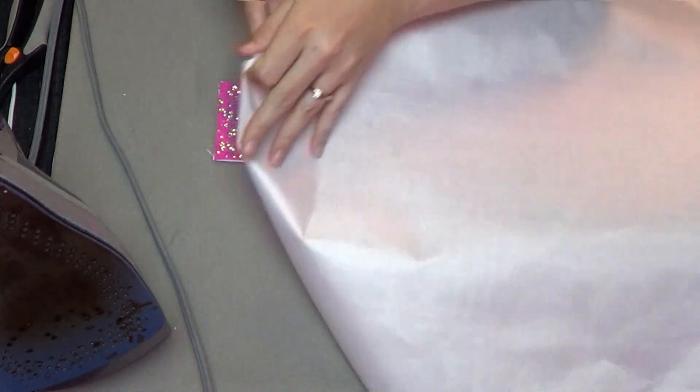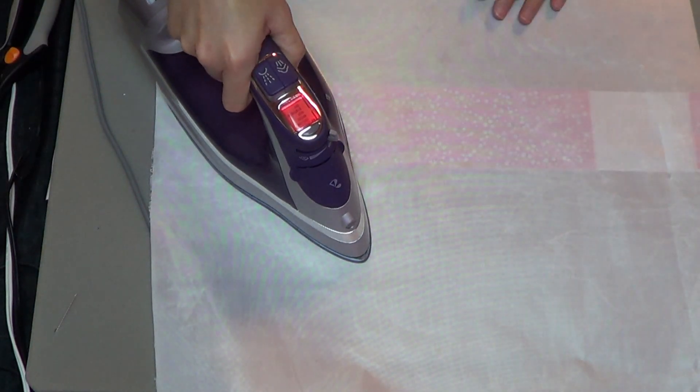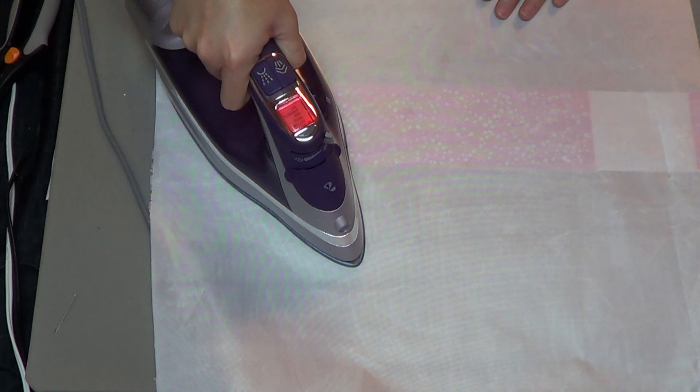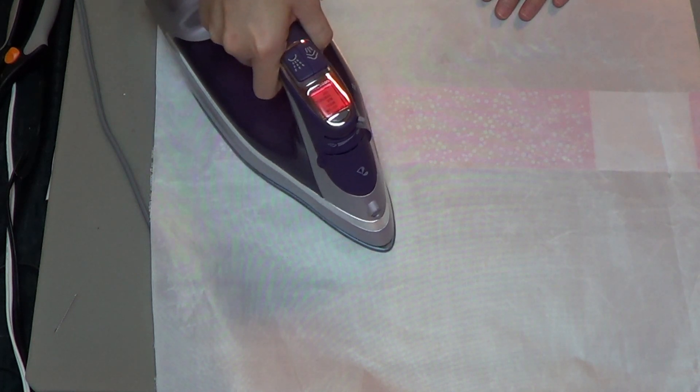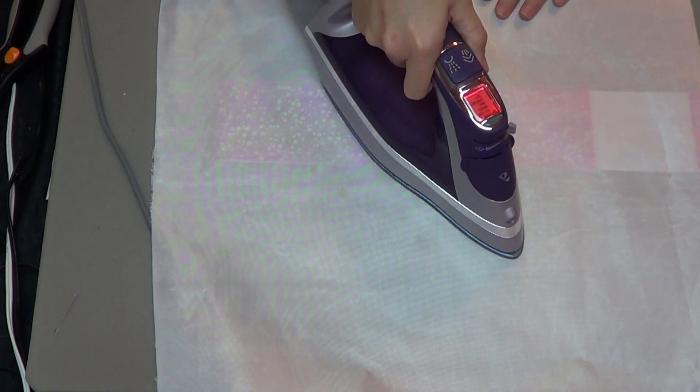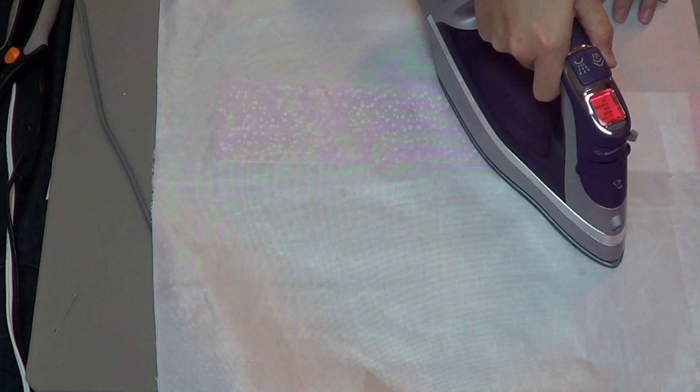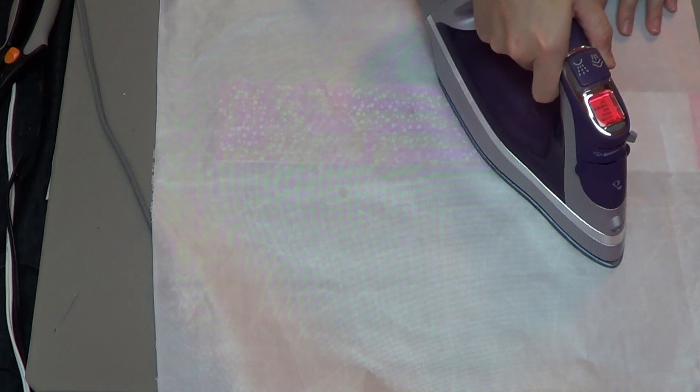It's on a clear carrier sheet to hold all the spangles in place, and then you just rest it right on top of your ribbon. Cover it with a pressing sheet again and go over it with your iron. Spangles iron on very easily to spandex—it's a very smooth surface. Just make sure your iron is on the hottest setting and you use some medium pressure.